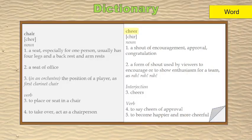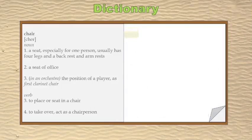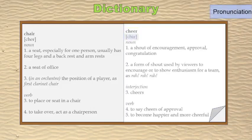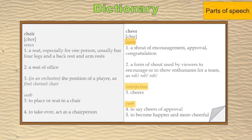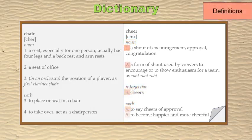Here you see how the word is pronounced. The same part also shows how many syllables the word has — "cheer" has one syllable. Here you see that it can be a noun, an interjection, or a verb, so you can find out what part of speech the word is.